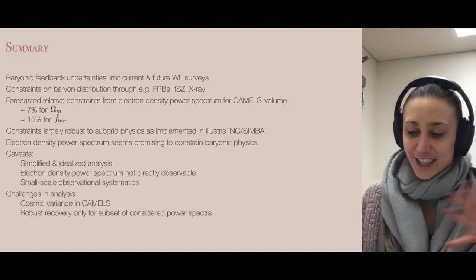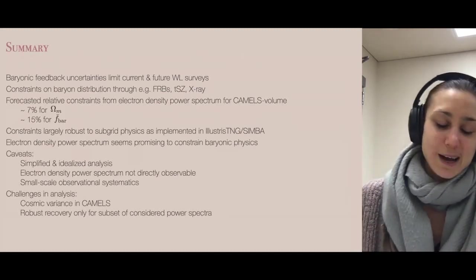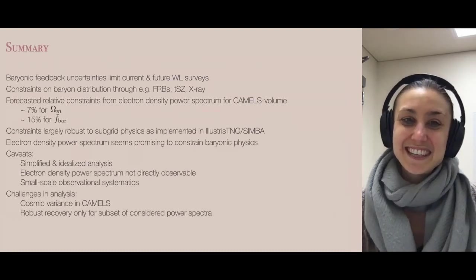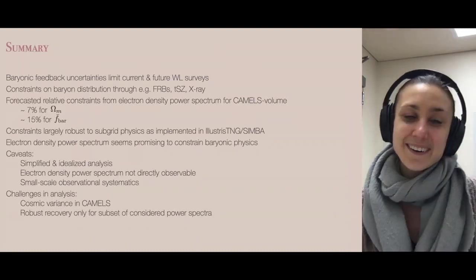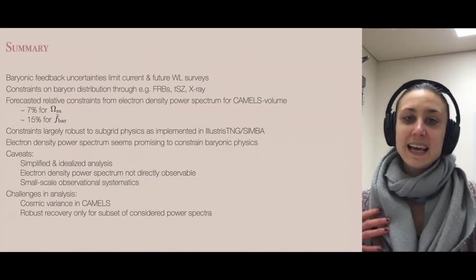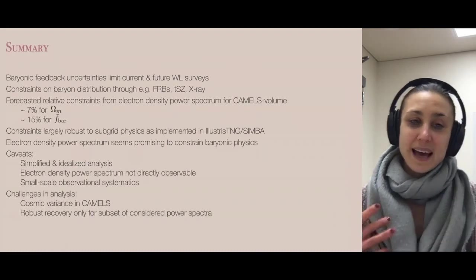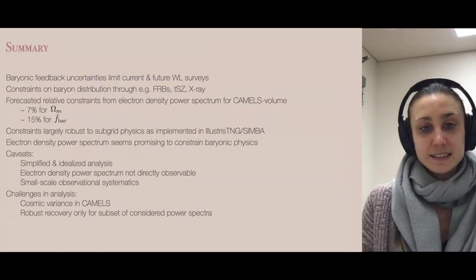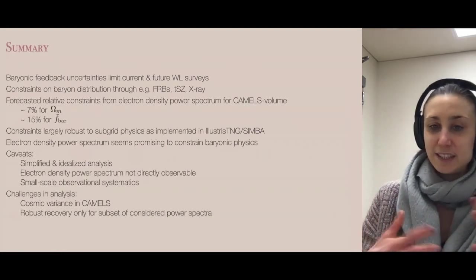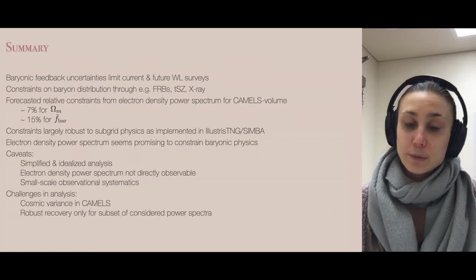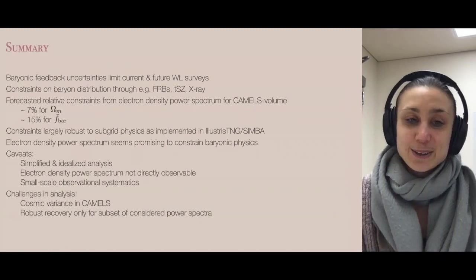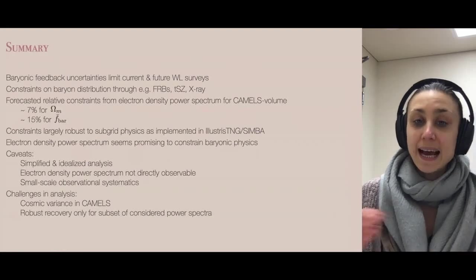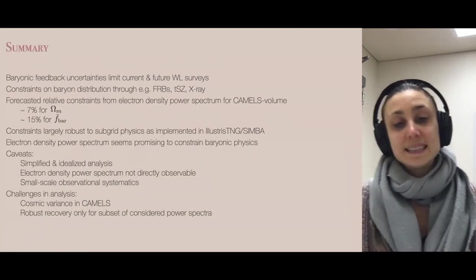In summary: uncertainties on the magnitude of baryonic feedback on the matter power spectrum really limit current and future weak lensing surveys. To make progress, we need better constraints on the baryon distribution. The electron density power spectrum allows us to reasonably tightly predict both Omega_m and the baryon fraction, and these constraints appear largely robust to differences in subgrid physics as spanned by IllustrisTNG and SIMBA. We conclude that the electron density power spectrum is a promising way to jointly constrain cosmology and baryonic physics while being robust to systematic uncertainties.